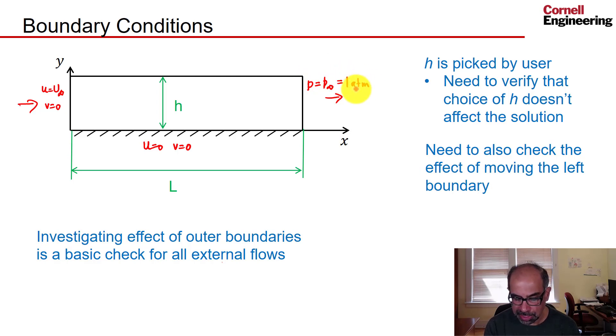And we can pick one atmosphere without loss of generality because we are really calculating the variations from P infinity through the gauge pressure. I'll get into that a little bit more when we are in Fluent.